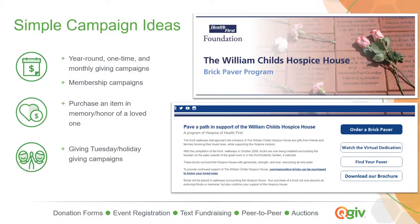Our standard donation forms are an important part of our start package, and every QGiv user has access to these tools. A lot of our clients are using our forms for year-round giving, and these forms are the primary donation forms users land on when they click the donate button on your website. These forms support both one-time and recurring gifts, so many of our clients have both options enabled on their donation form. Those recurring gift options make it really easy to set up campaigns to support various memberships, impact circles, young professionals groups, or mentorship programs.